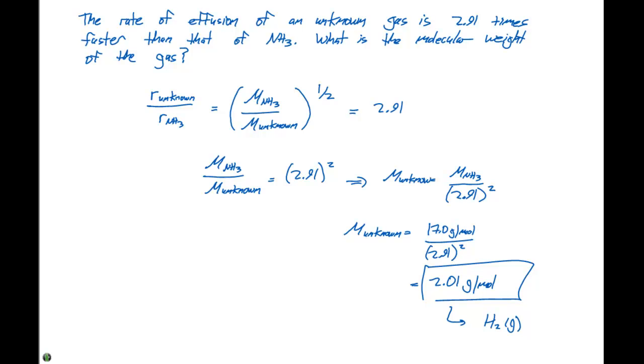We can see this, that our unknown gas is 2.91 times faster than NH3. So when we do our calculation, we would expect that the value that we determine, since our unknown is a lot faster, that means the molar mass has to be much smaller than it is for NH3. And that is indeed the case here, as we calculated 2.01, which would give us hydrogen gas.